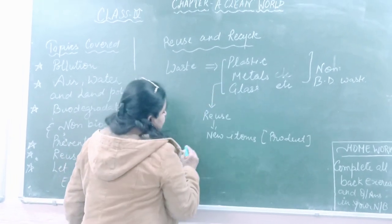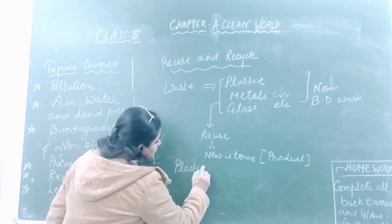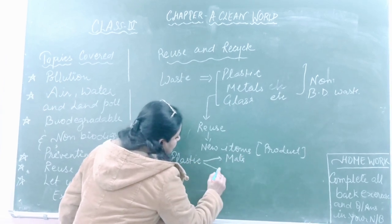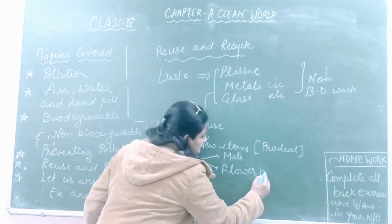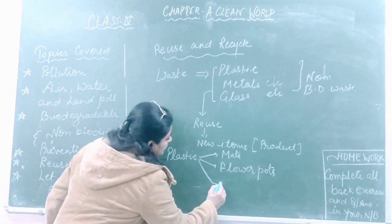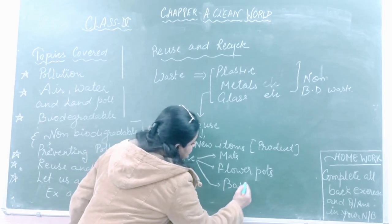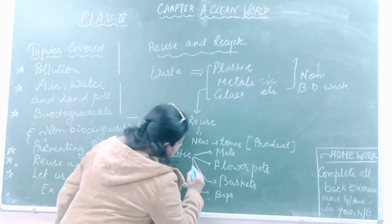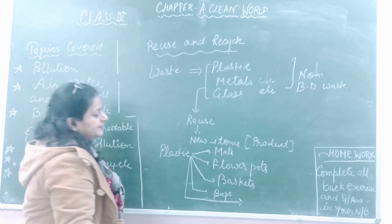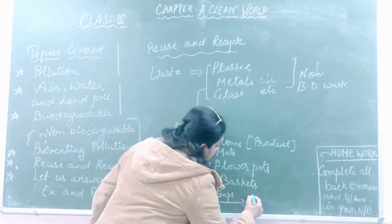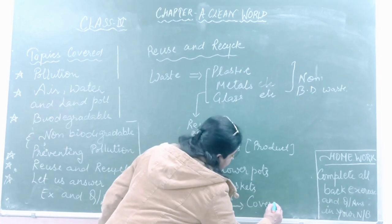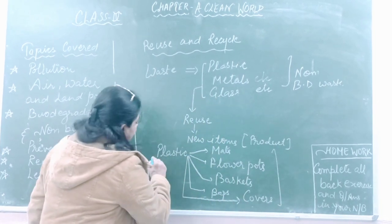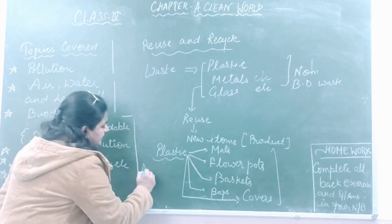With the help of plastic, what can we make? We can make mats, we can make cover pots, we can make baskets, we can make bags, and we can make some different items like covers that are useful for your home. That type of items we can make with the help of plastic.